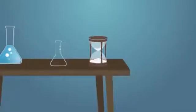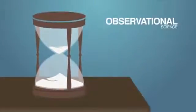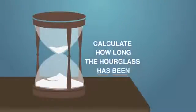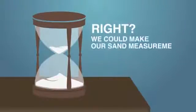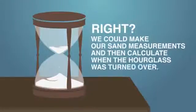Let's simplify here and talk about a typical hourglass. Let's say you walk into a room and you see an hourglass with sand at the top and sand at the bottom, and some sand sprinkling from the top chamber to the bottom. Well, observational science would allow us to see and measure the sand, and then calculate how long the hourglass has been running, right? We could make our sand measurements and then calculate when the hourglass was turned over, right?